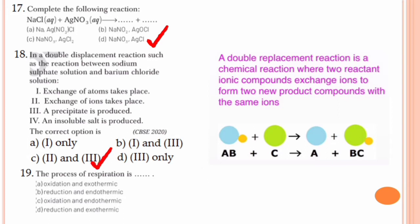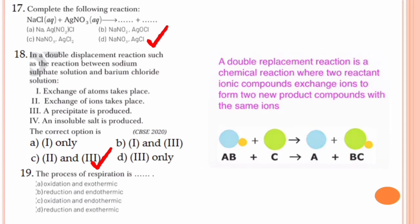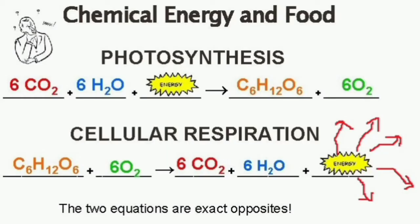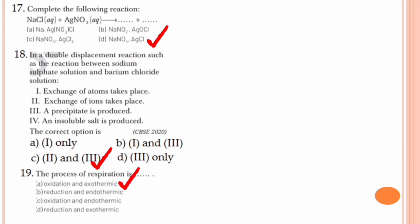Question number 19. The process of respiration is: oxidation and exothermic; reduction and endothermic; oxidation and endothermic; or reduction and exothermic. Respiration is a process where heat energy is released, and wherever heat energy is released, we call it an exothermic reaction. In this reaction, glucose combines with oxygen, and whenever a substance combines with oxygen, it is an oxidation reaction. Hence the correct option is option A, oxidation and exothermic.